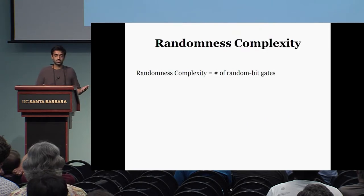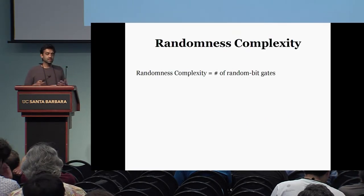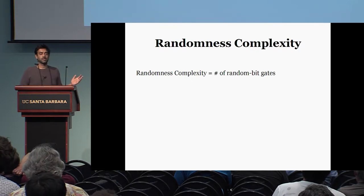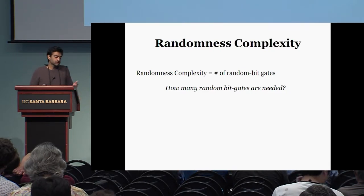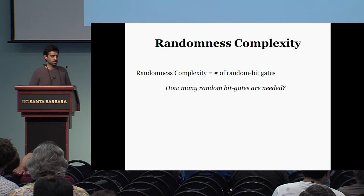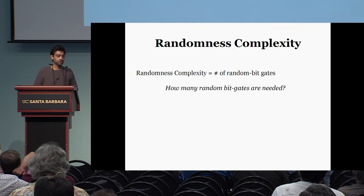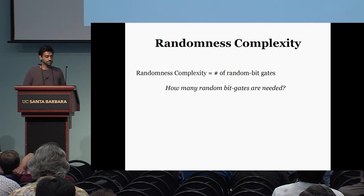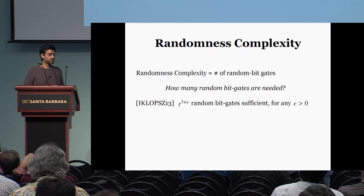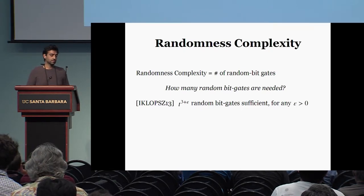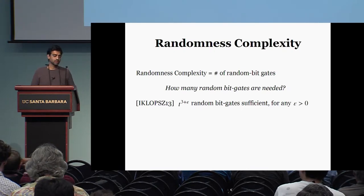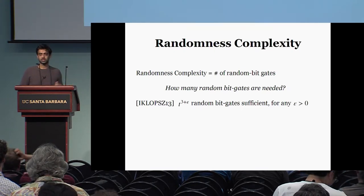The randomness complexity of a circuit compiler is the number of random bit gates. A natural question to ask is how many random bit gates are needed for a leakage-resilient circuit compiler. This is naturally motivated because randomness is a scarce resource, so you don't want your compiler to have too many random bit gates. A few years back, Isha et al. studied this problem and showed a positive result which uses just slightly more than T cubed random bit gates, where T is the threshold associated with the compiler.